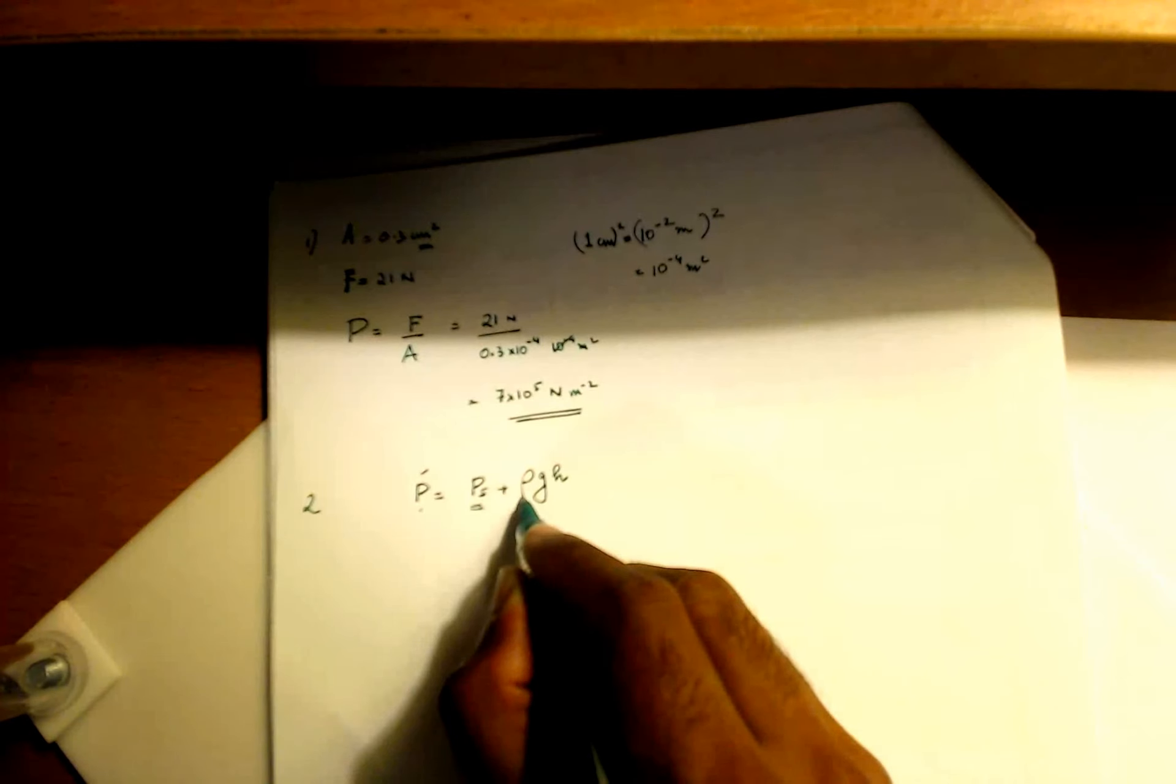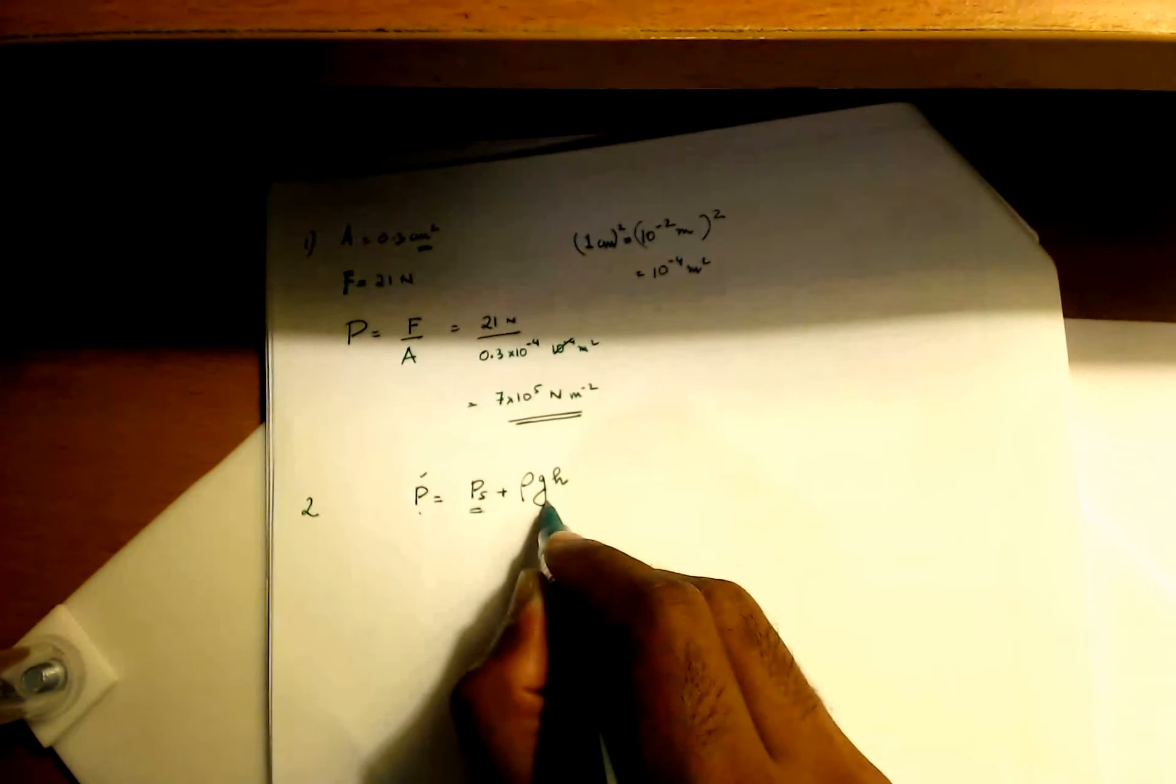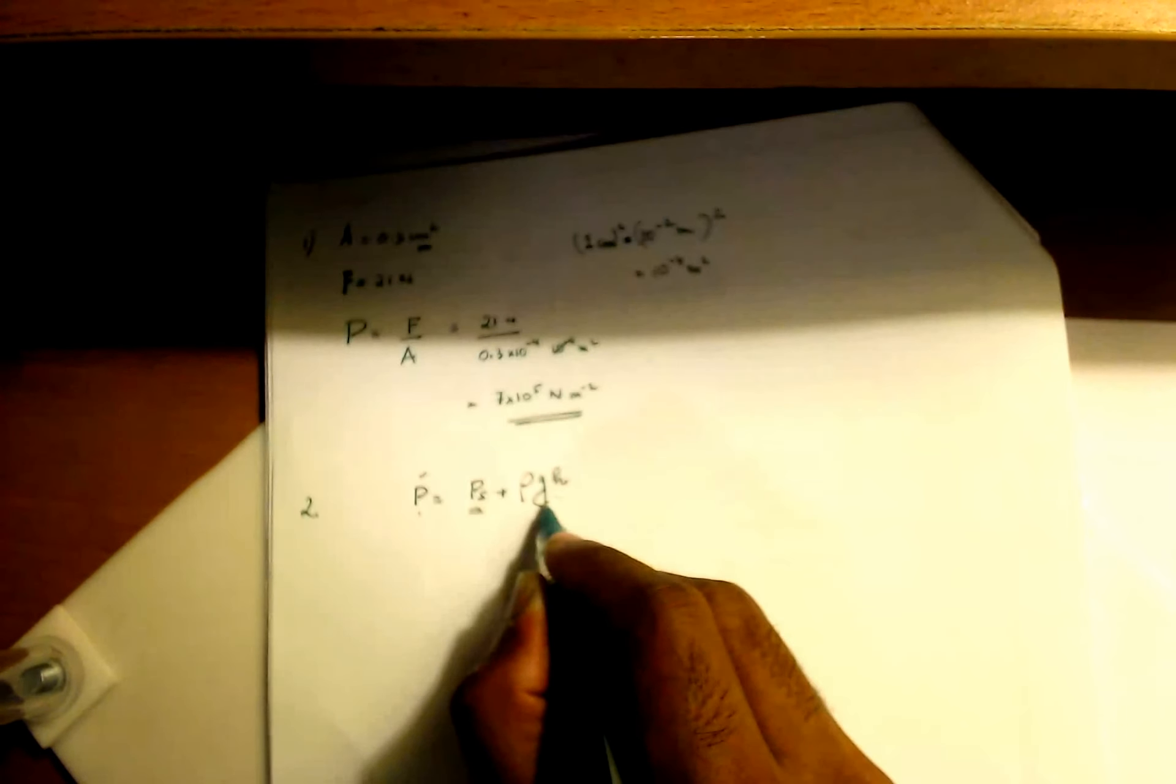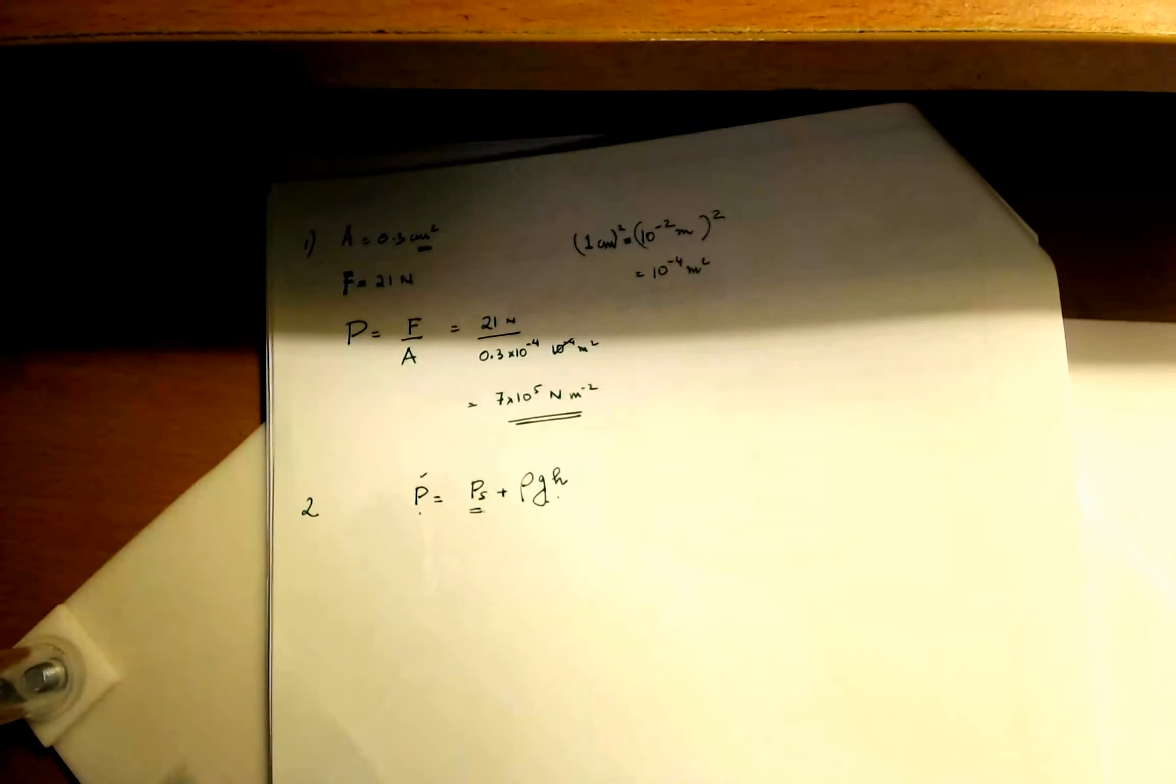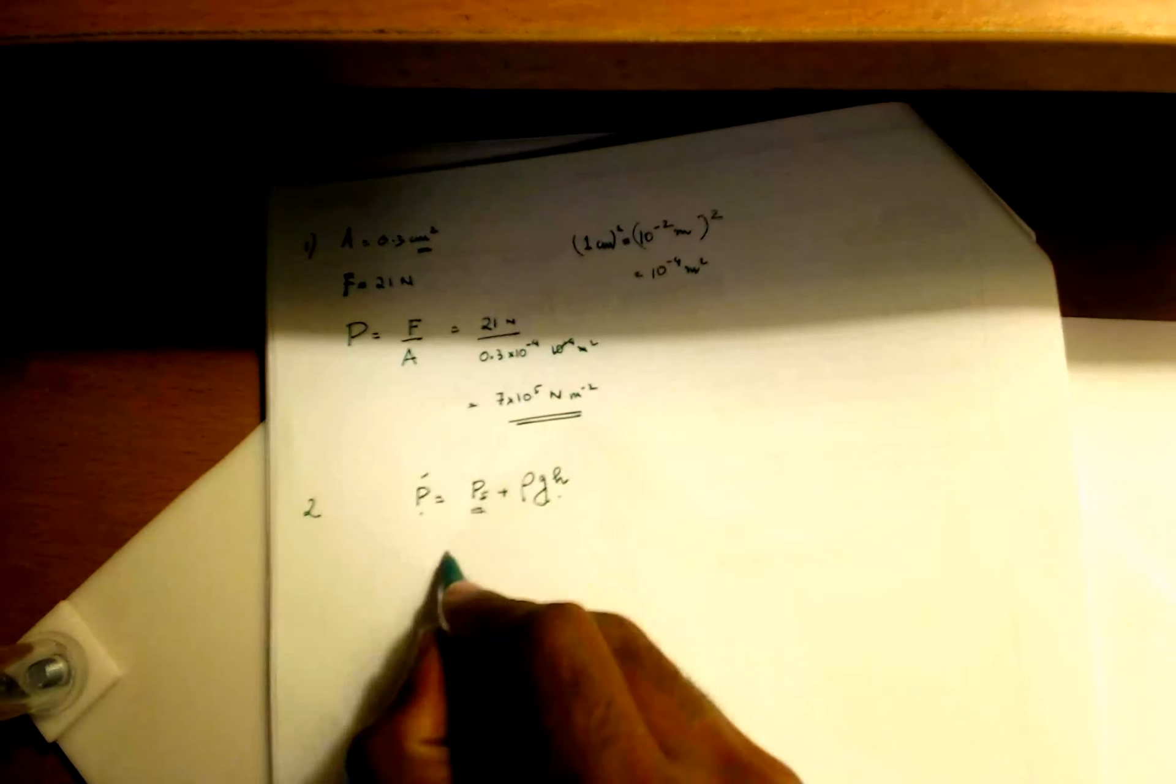We want to put the surface pressure value, we want to put the density of whatever fluid or liquid we're talking about, G times H. G is a constant, H is the height at which we're trying to find the pressure.